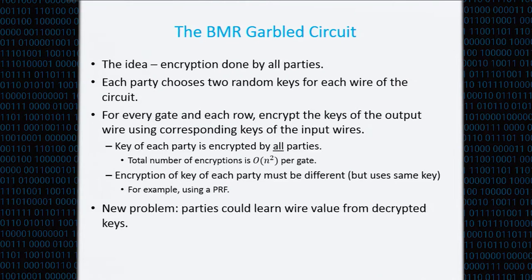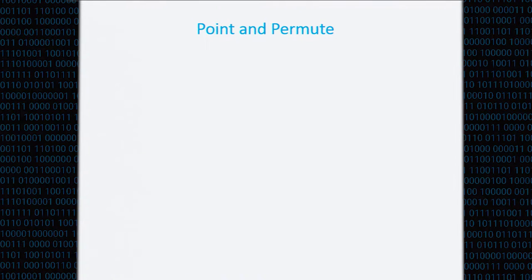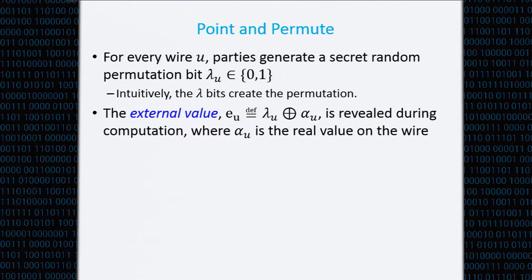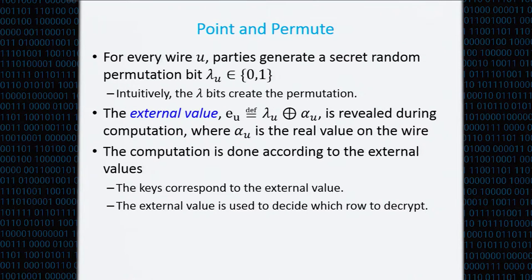One way to handle repeated key use is to use a PRF. Now the parties hold some part of the keys, so by comparing with their own part they can recover the wire value. Permuting the rows doesn't solve this problem anymore. The solution is called point-and-permute. For every wire, the parties generate a secret random permutation bit which none of the parties know. What is revealed during evaluation is not the real value but an external value — the XOR of the real value and the permutation bit. Even knowing the external value, the real value is still random. The computation is done according to the external values, and on output wires the permutation bits are made public.